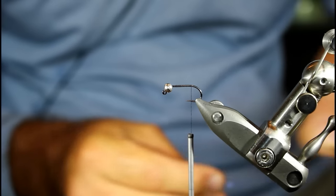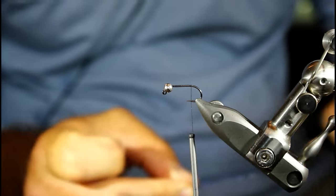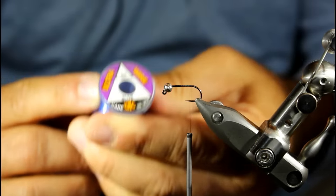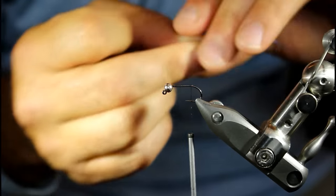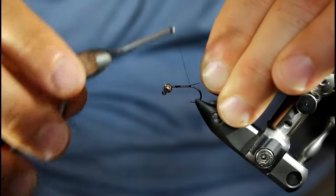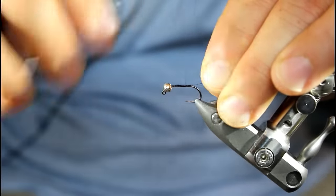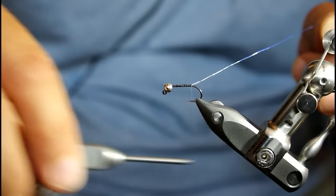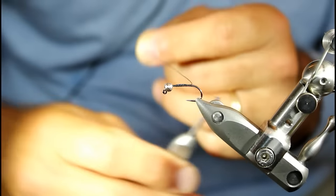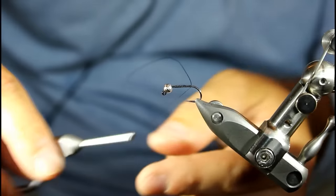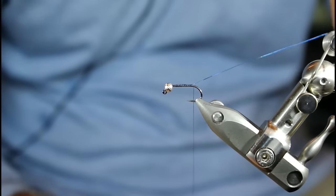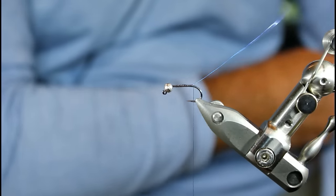We're going to be using some ADOT unithread and we're going to tie back to about where the barb would be on this hook though it's barbless. And at that point we're going to immediately tie in our ribbing. Our ribbing in this case is going to be some ultra wire. The size is brassy and the color is blue. We'll just get that lashed onto the hook and go back. And whenever we go back we're actually going to place just one or two wraps behind that wire.